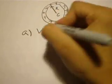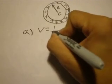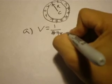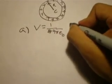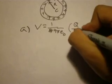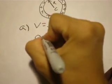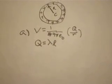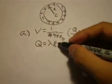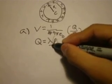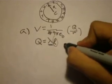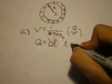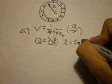We know that V equals 1 over 4 pi epsilon naught times Q over R. And we know that Q equals lambda L. So all we have to do is figure out what L is because they give us what lambda is. L is just the circumference of the circle, so L equals 2 pi R.